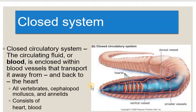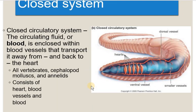Next is the closed circulatory system. In a closed circulatory system, blood vessels and heart are both present. It is present in all vertebrates, as well as in cephalopod mollusks and annelids. Blood is pumped by the heart and moves to different body organs through blood vessels.